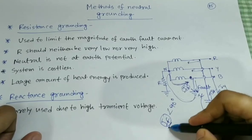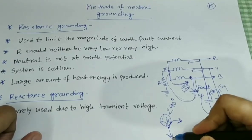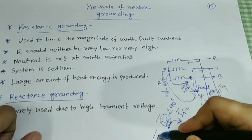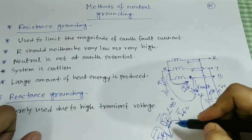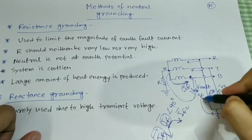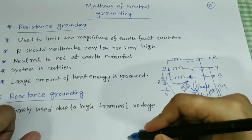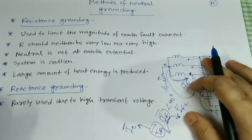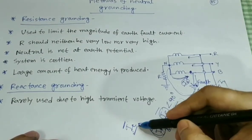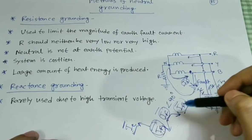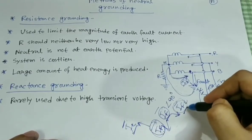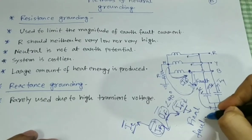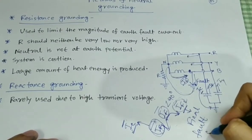There will be two components — suppose IF1 and IF2. One component, IF1, will be in exact phase opposition with the capacitive current IC. These two components will nullify each other. So if IF1 and IC completely nullify each other, then only IF2 will be left, and that will be the final fault current that flows through the circuit.